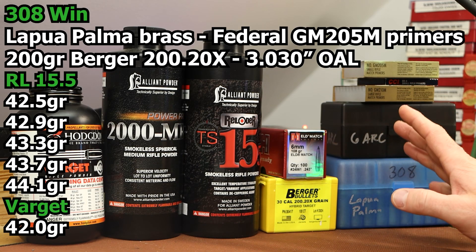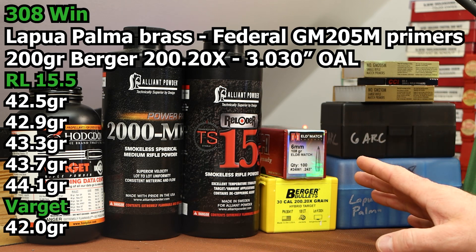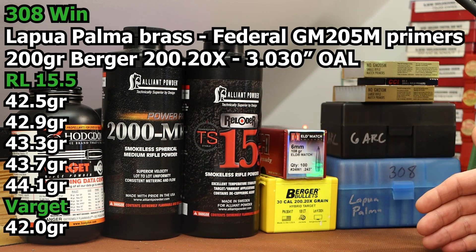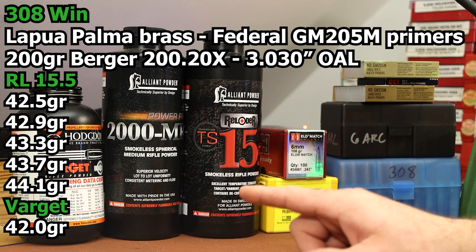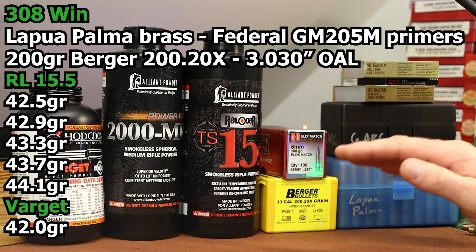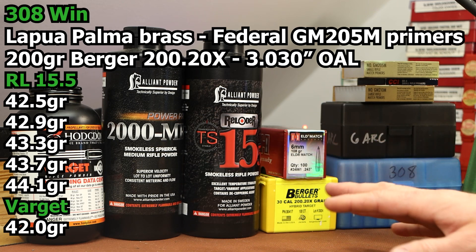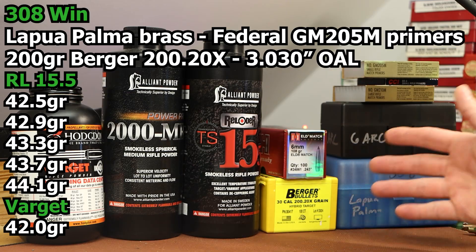I'm not really sure what sort of velocities to be on the lookout for here. I haven't shot a ton of heavy bullets in this gun. So I loaded up five rounds with Hodgdon Varget at 42.0 grains. That should be a reasonably stout load that should give us a good idea of about where we should be.